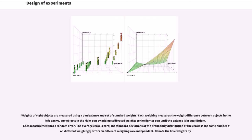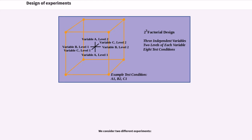Weights of eight objects are measured using a pan balance and set of standard weights. Each weighing measures the weight difference between objects in the left pan versus any objects in the right pan by adding calibrated weights to the lighter pan until the balance is in equilibrium. Each measurement has a random error. The average error is zero. The standard deviations of the probability distribution of the errors is the same number sigma on different weighings. Errors on different weighings are independent. Denote the true weights by theta. We consider two different experiments.